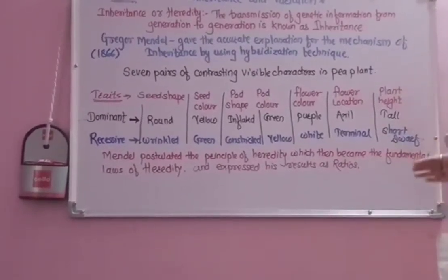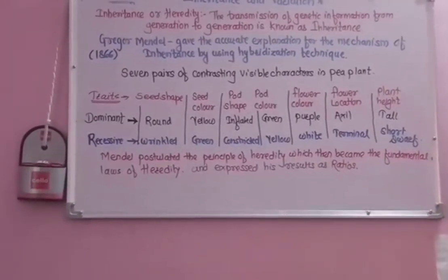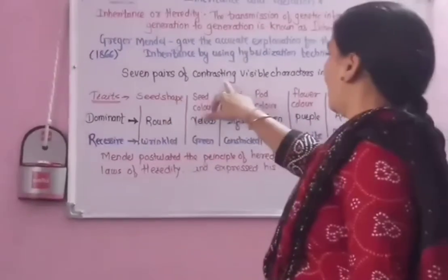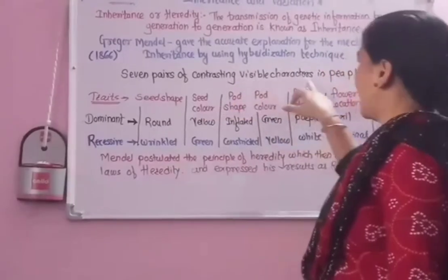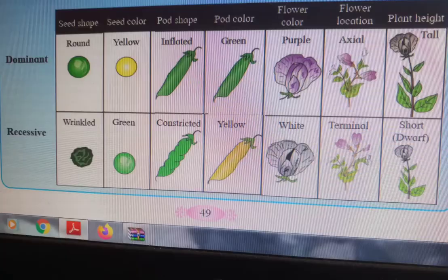Mendel studied 7 pairs of contrasting visible characters in pea plants. The 7 traits were: seed shape, seed color, pod shape, pod color, flower color, flower location, and plant height.